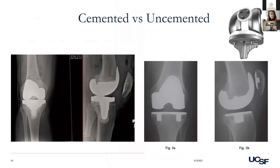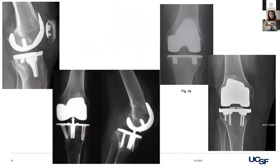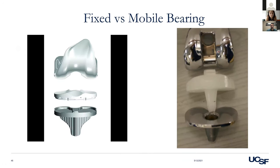Briefly on implant identification. Cemented versus cementless: you should be able to see the fluffy cement around a cemented implant. Cementless implants have short square pegs; some had screws. Metal-back patellas often indicate a cementless knee. Fixed bearing tibial trays have a groove that locks the poly insert in place. Mobile bearing trays have a flat surface with a central post that allows rotation.